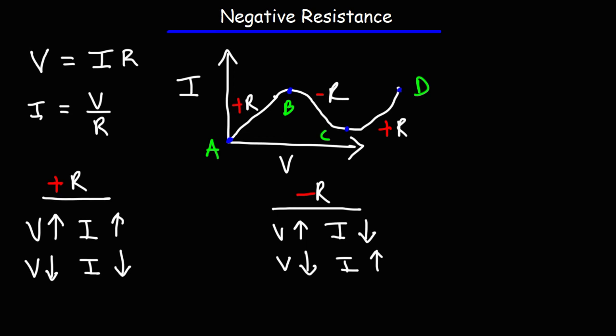There are a lot of devices that exhibit negative resistance. For instance, the tunnel diode exhibits negative resistance in this region — when the voltage goes up the current goes down. Another more common device you'll encounter in electronics is the NPN transistor, which when connected in a certain way can also exhibit negative resistance, as I'll discuss later in this video.